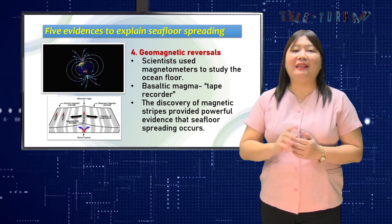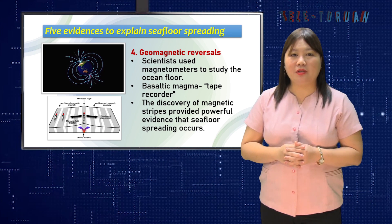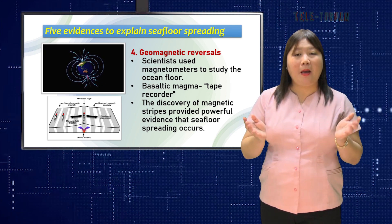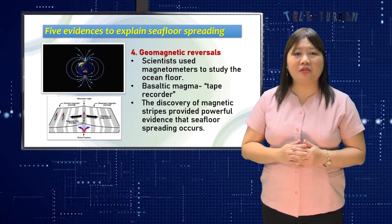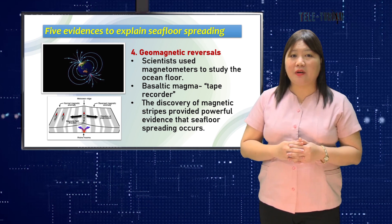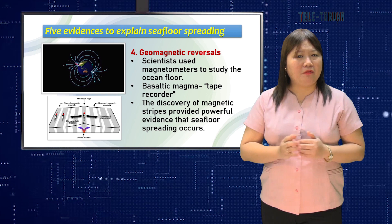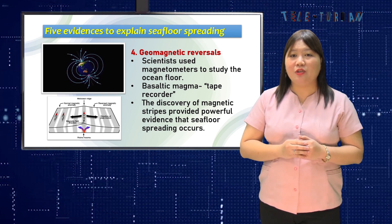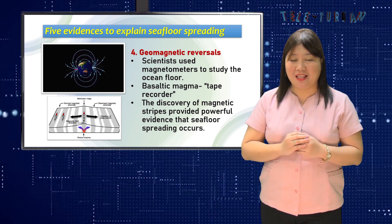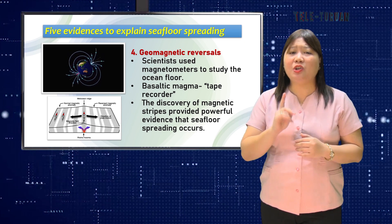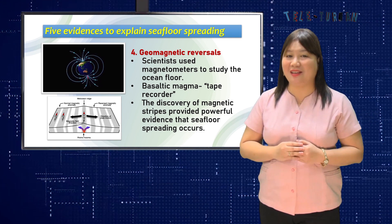Fourth is geomagnetic reversals. When research scientists used magnetometers to study the ocean floor, measurements of magnetic variation showed that alternating bands of rocks recording normal and reverse polarity were arranged symmetrically about mid-ocean ridges. Basaltic magma forming at mid-ocean ridges serves as a kind of tape recorder, recording the Earth's magnetic field as it reverses through time. The discovery of such magnetic stripes provided powerful evidence that seafloor spreading occurs.